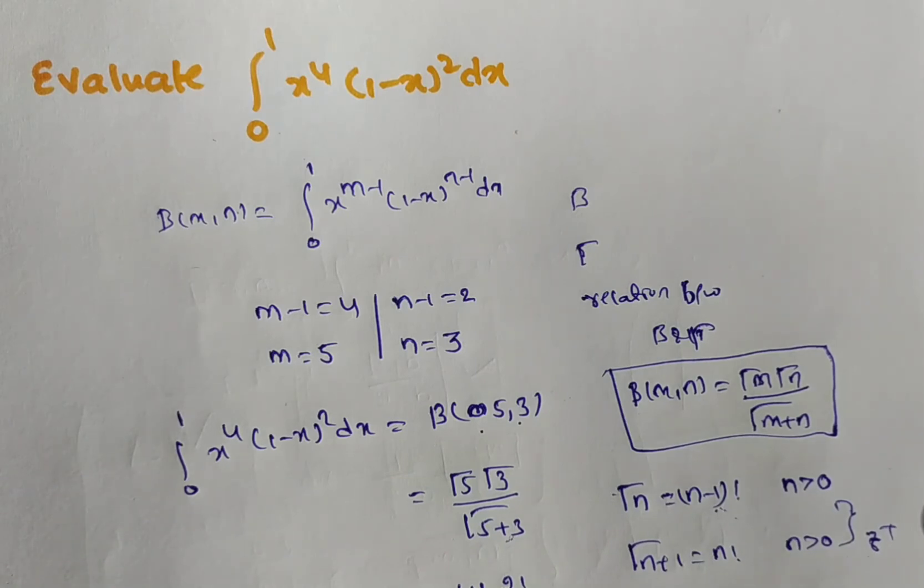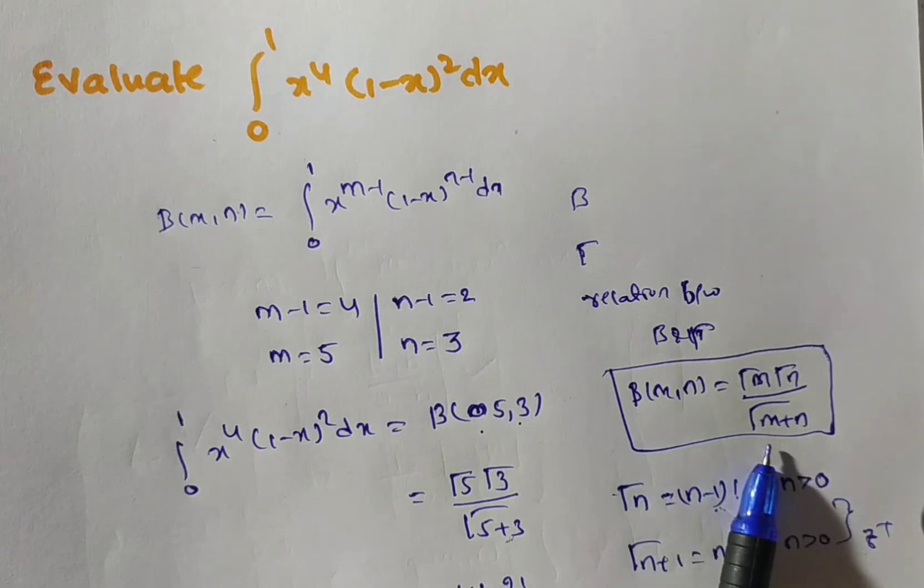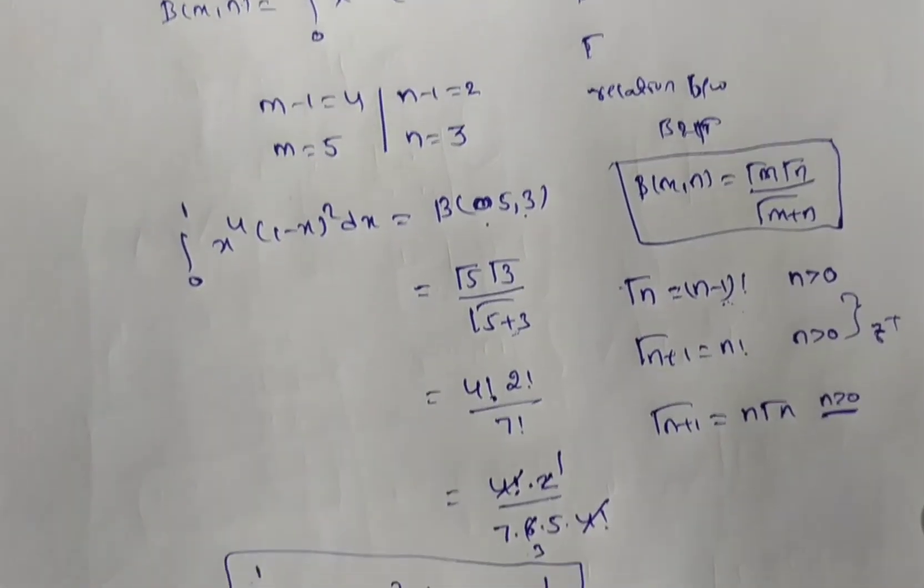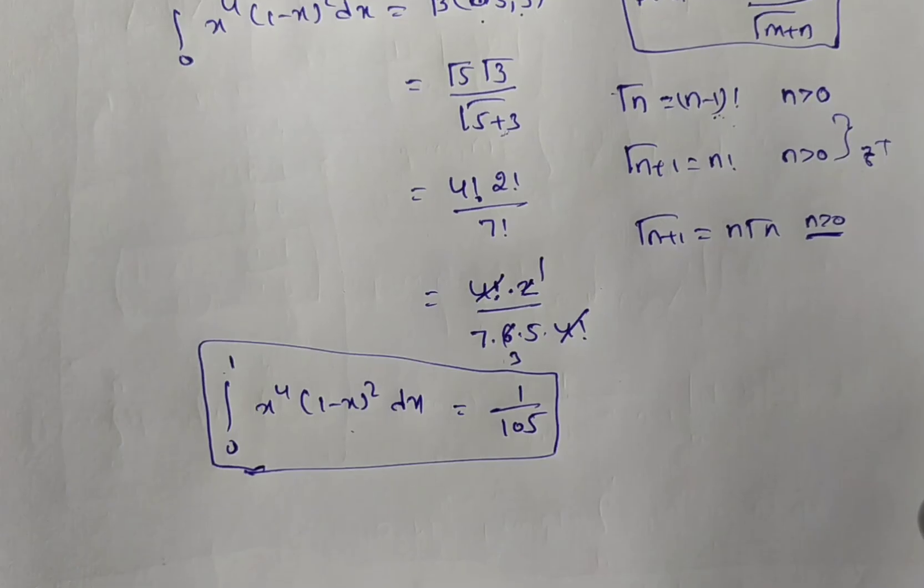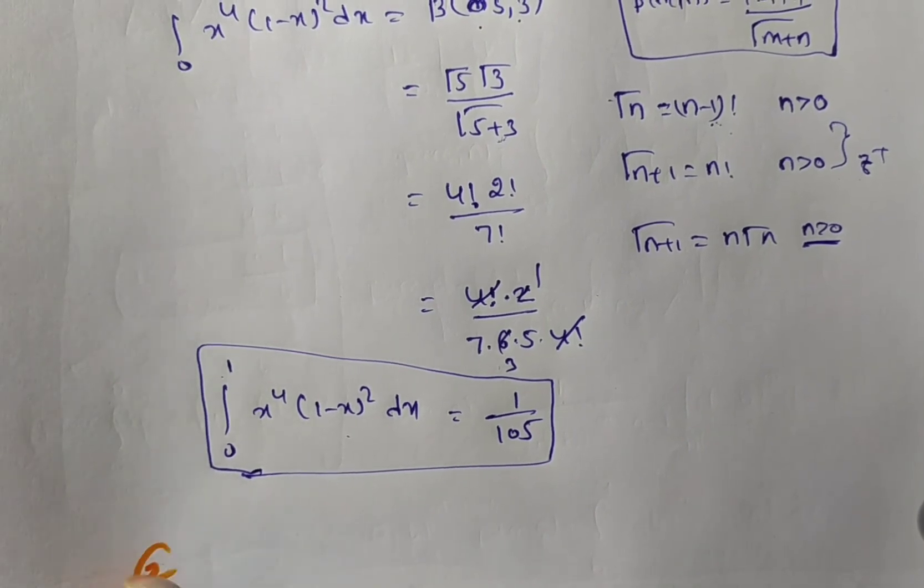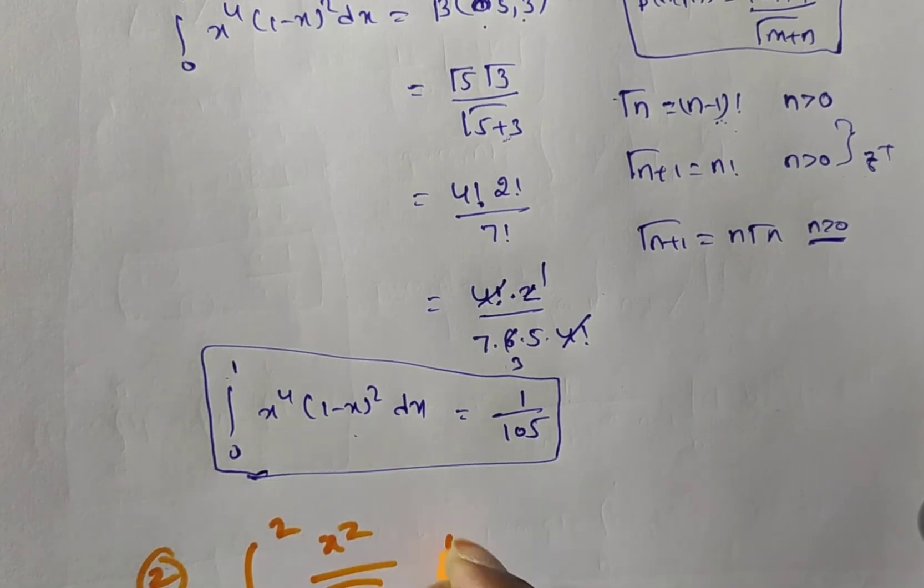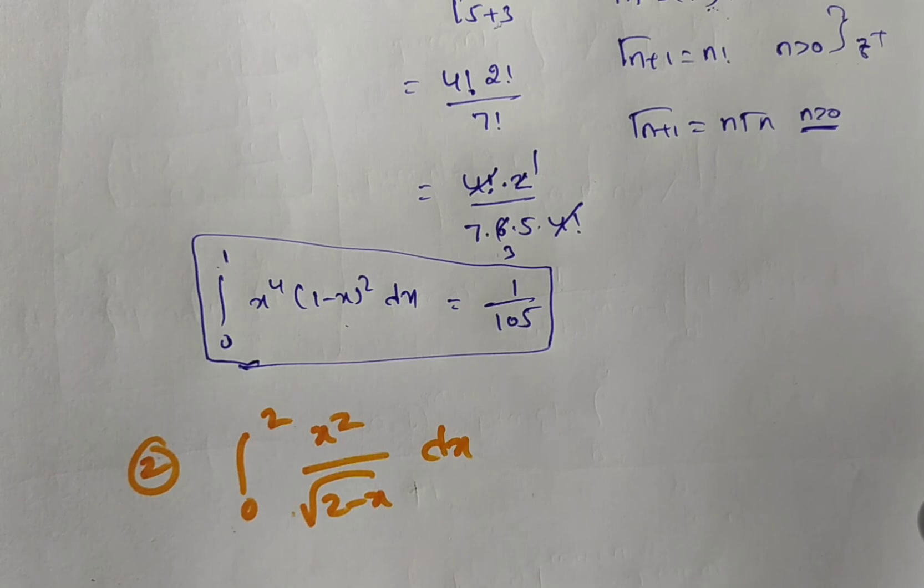If beta of 5 comma 3 they are asking, then up to that only enough to prove. But, if they are given totally evaluate, we need to use the relation between beta of m comma n and we have to solve. Next, we will discuss the similar problem, that is, integral 0 to 2, x squared by square root of 2 minus x dx. This one also we are evaluating by using the relation between beta and gamma. Watch the next video.